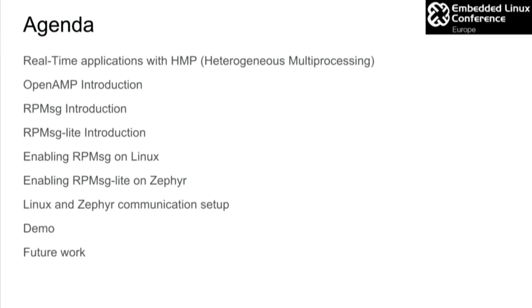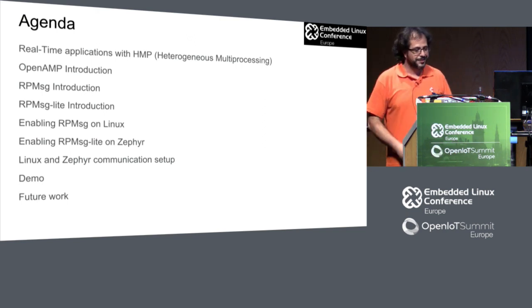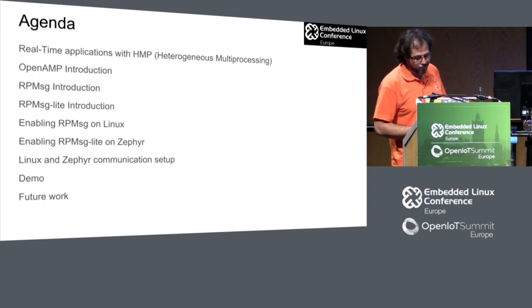Then we are going to talk about a variation of this — another implementation that is the RPMSG Lite. Then we will see how we enable the RP message on Linux, how we enable the RP message Lite on Zephyr, how the communication is set up between Linux and Zephyr, hopefully a demo, and the future work.